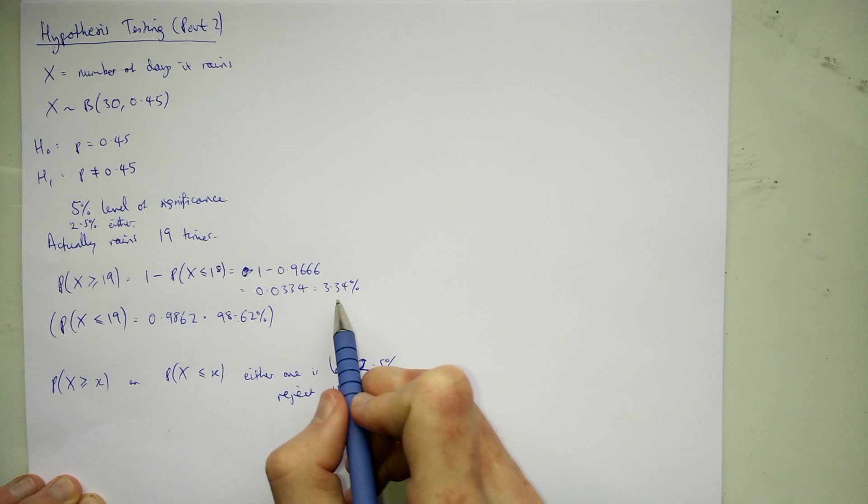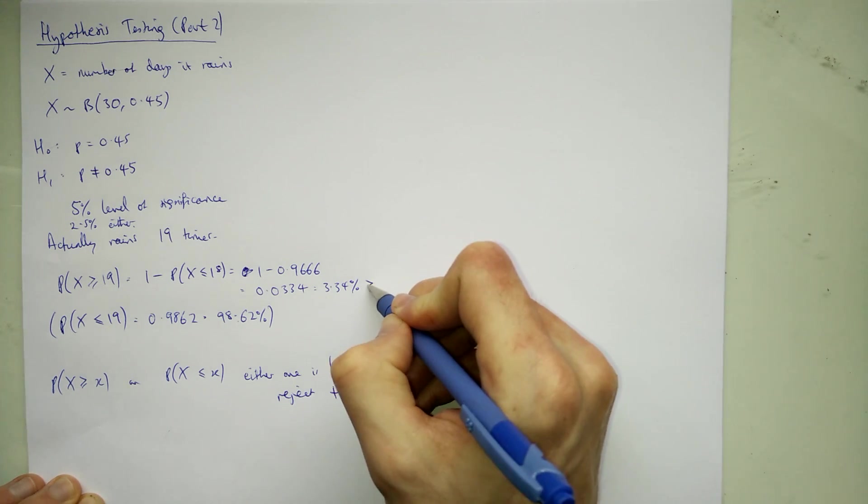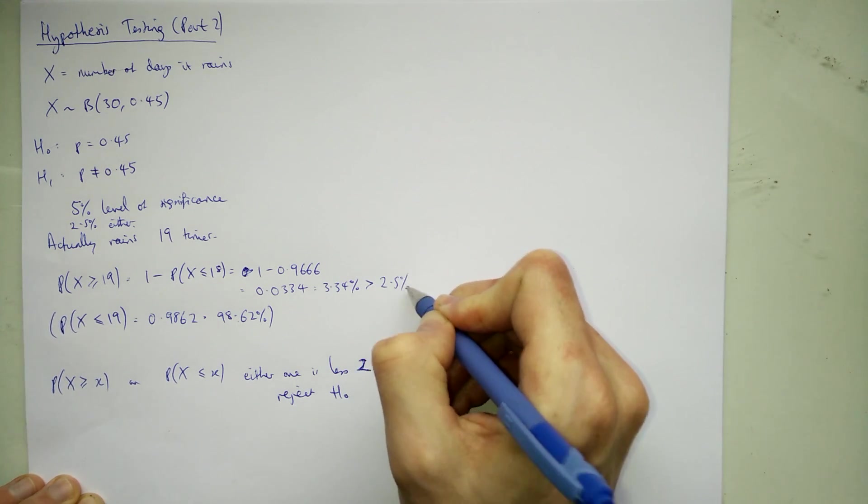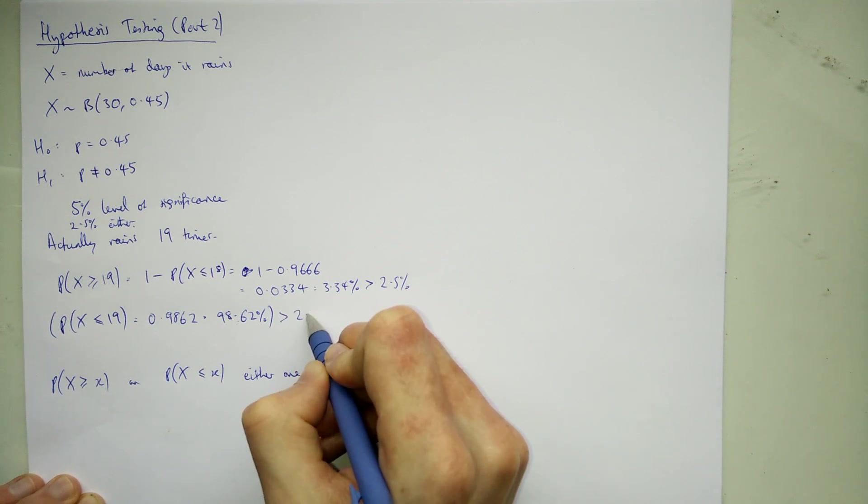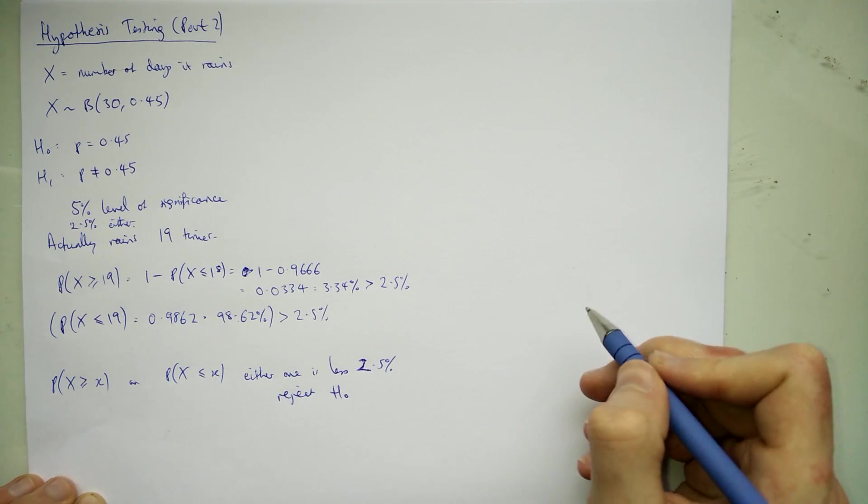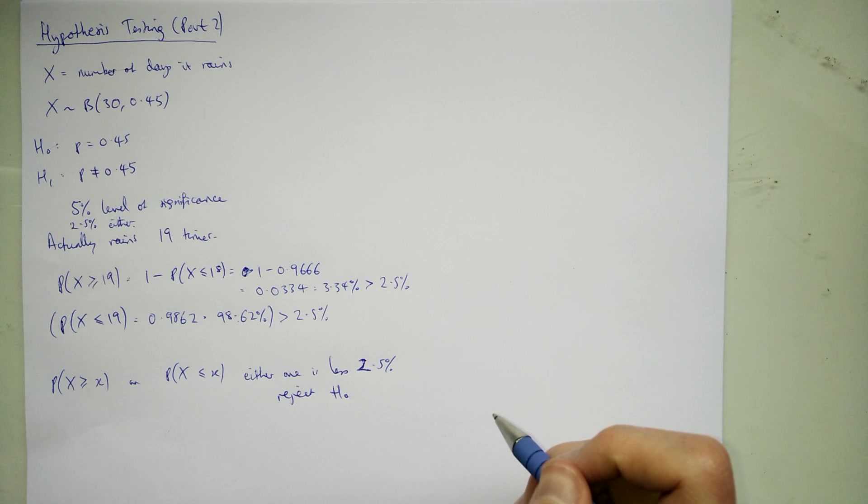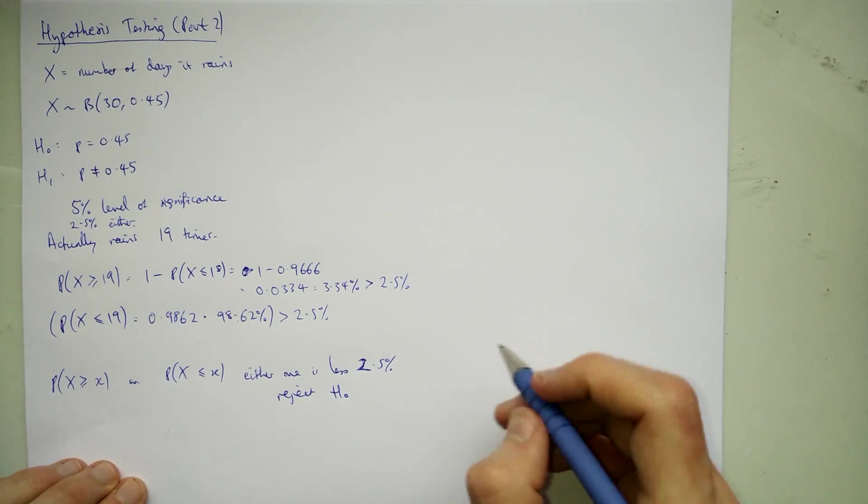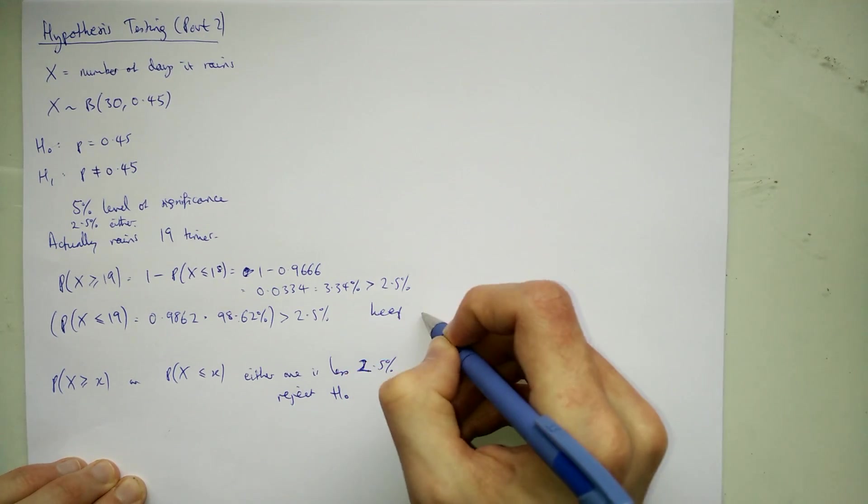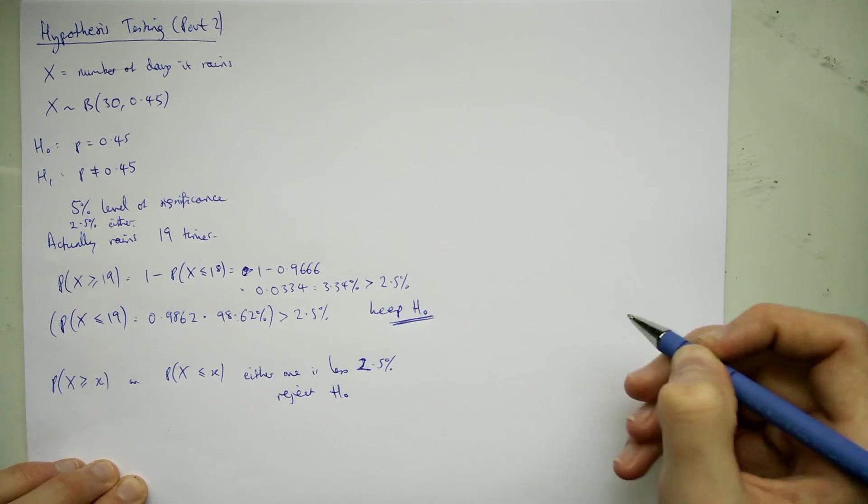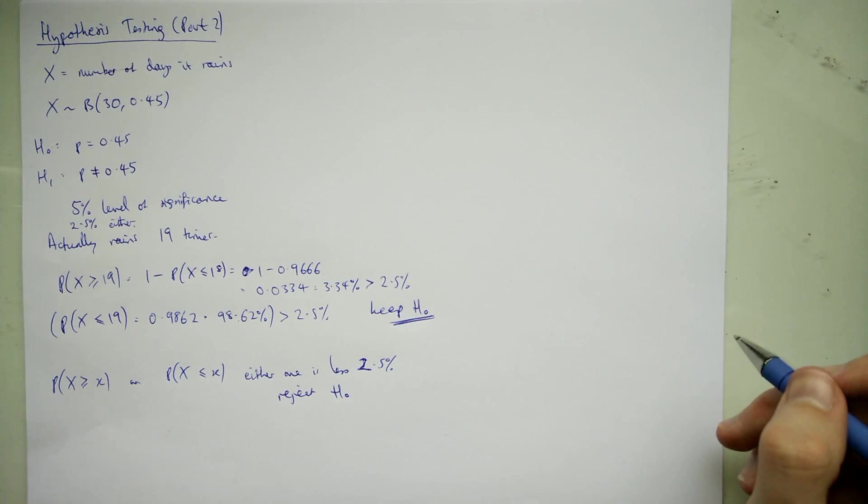So let's have a look here. So that one there isn't less than 2.5%. It's bigger than 2.5% and this one here is definitely bigger than 2.5%. That's why you need to look at the smaller percentage because if one's bigger than the other one's got to be bigger. So we should keep H0. So we stick with P equals 0.45.